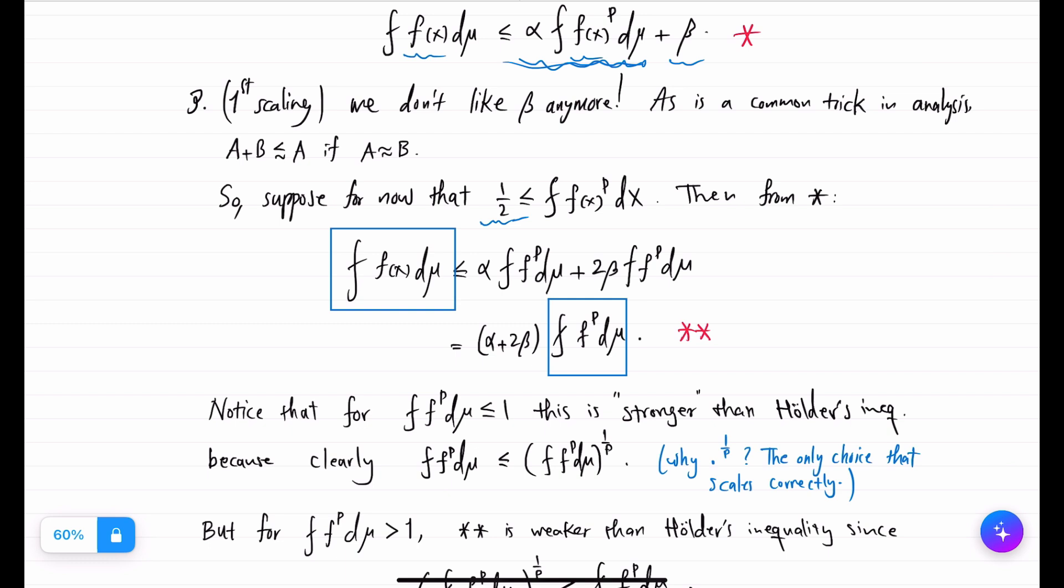And this is not Hölder's inequality because we don't have 1 over p there. But notice that actually this is stronger than Hölder's inequality if integral of f to the p is less than 1.